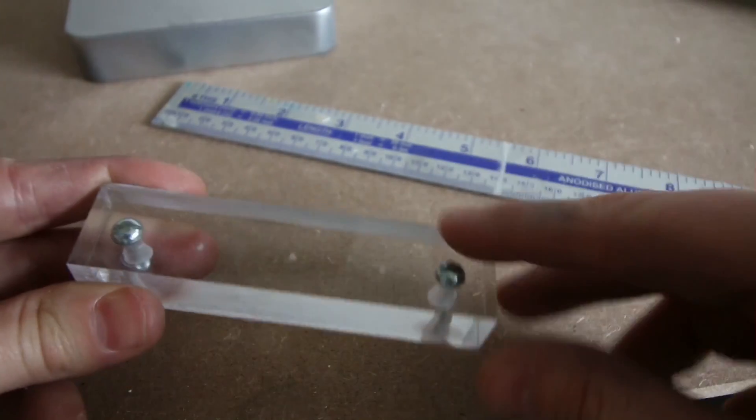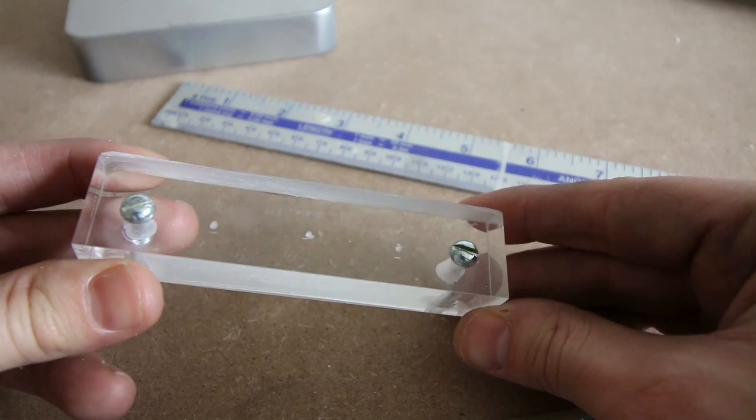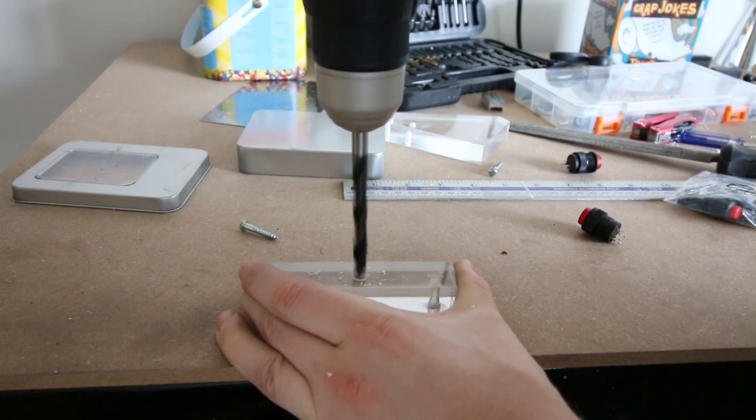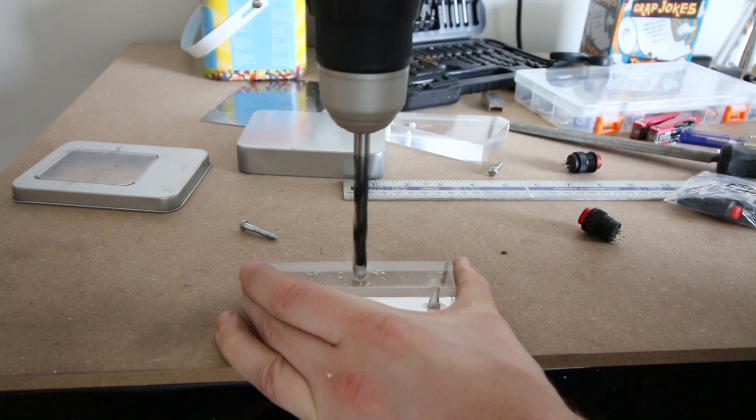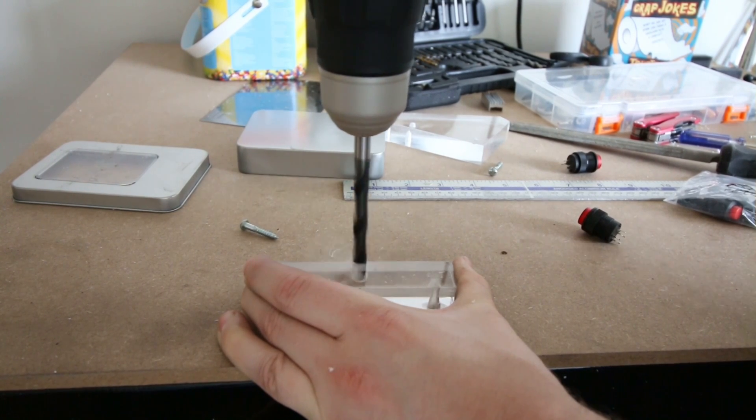I then measured three spots equal lengths apart and used a drill piece thick enough to make holes for the average pen. Each hole I drilled down until it was around 3mm away from the bottom.